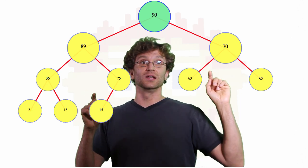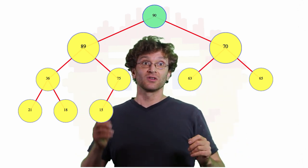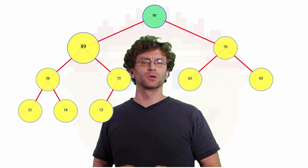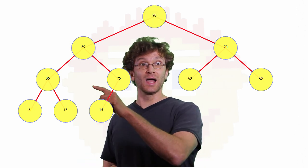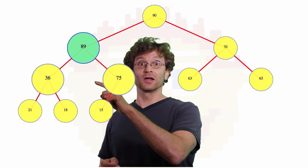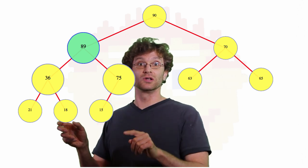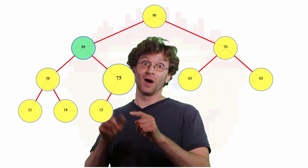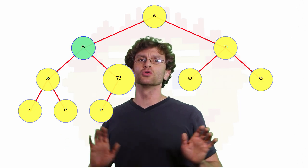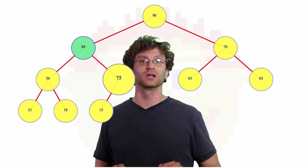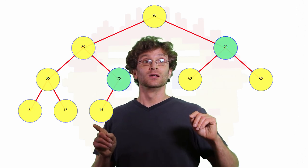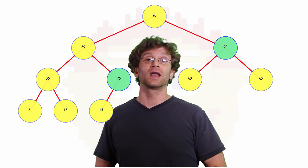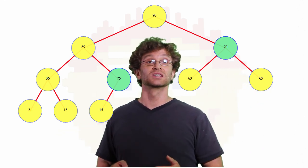So 90 is at least as large as 89 and 70. In this case, 89, the left child, happens to be bigger than 70, the right child. That property is going to happen throughout the heap. If we look at 89, 89 is a node, and its value is at least as large as the values in its children, 36 and 75. In this case, 75 happens to be the right child and it's bigger than the left child. There's no left-right orientation of which is larger in the heap. Also notice, 75, even though it's on a lower level of the heap, has a larger value than 70. That can happen as long as 75 is not a direct descendant of 70.